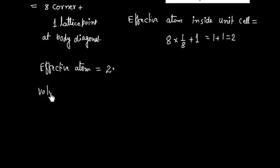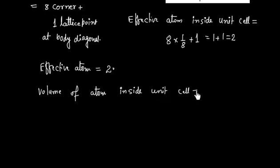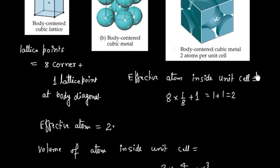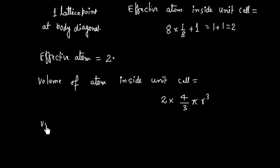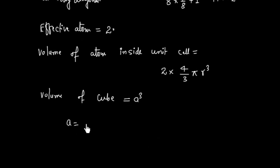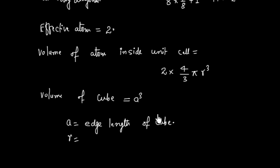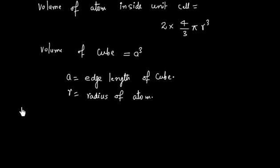Let us find the volume of the atom inside this cubic unit cell. The volume of the cube is A cubed, where A is the edge length of the cube, and R is the radius of the atom. To calculate the packing fraction, we need the relationship between A and R.